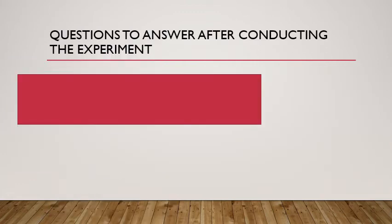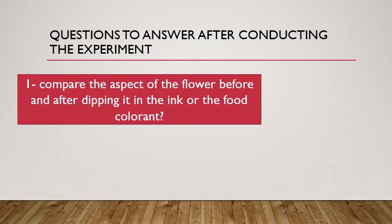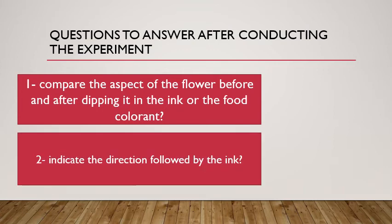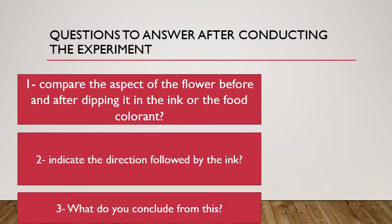After conducting the experiment, answer the questions. The first question: compare the aspect of the flower before and after dipping it in the ink or food colorant. The second question: indicate the direction followed by the ink. Then make a conclusion.